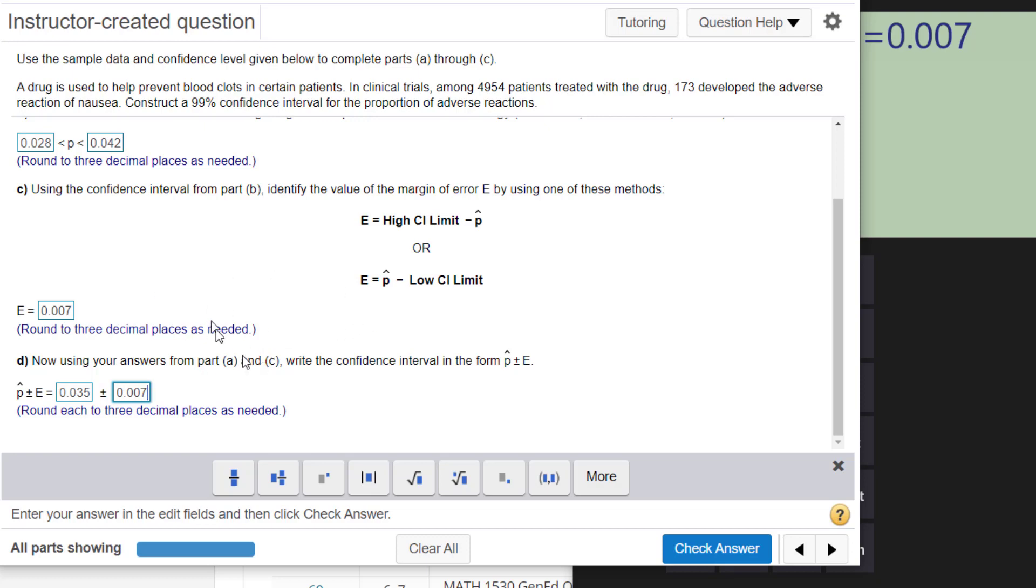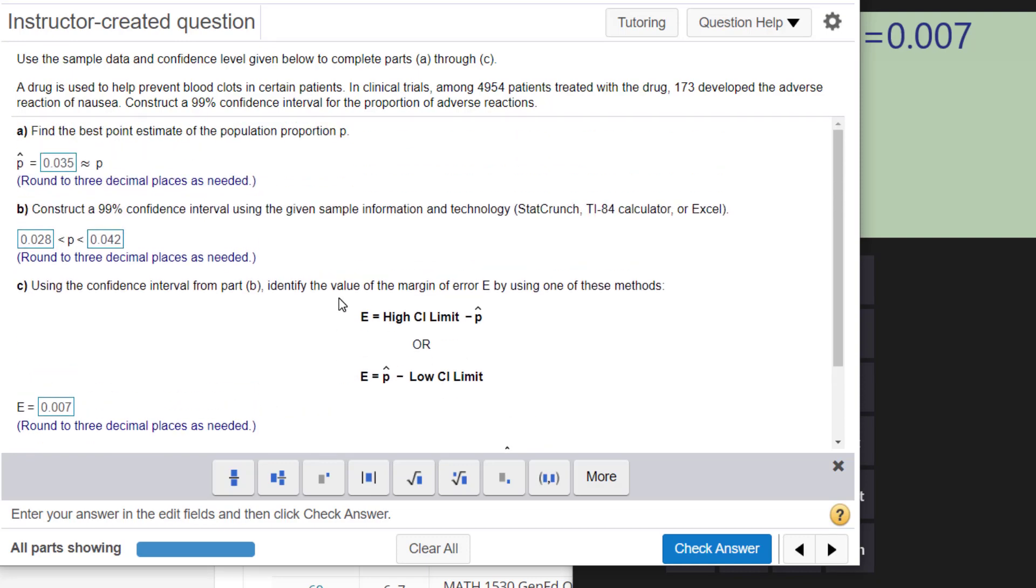So this is basically how you use StatCrunch along with your basic calculator to find margin of error on some problems.